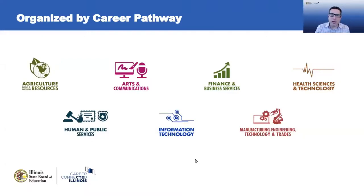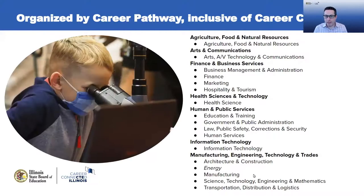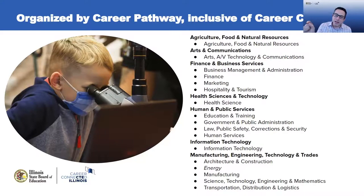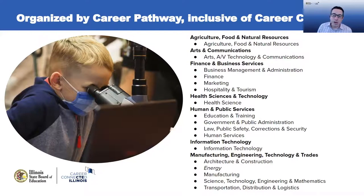There are seven of these documents, organized by career pathway — these are our seven college and career pathways in Illinois. These were developed in line with the career pathway endorsements that we now have in place as a result of the Post-Secondary and Workforce Readiness Act. Within these seven career pathways, our career clusters still exist. There have historically been 16 career clusters nationally, and in Illinois we actually have 17 because we include energy as a career cluster. These career clusters map to the different career pathways, and you'll notice right away that each career pathway does not have the same number of career clusters.